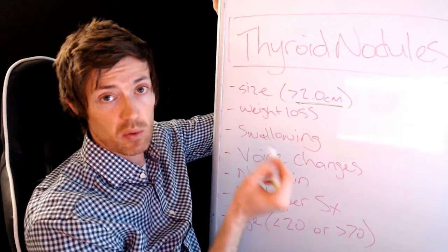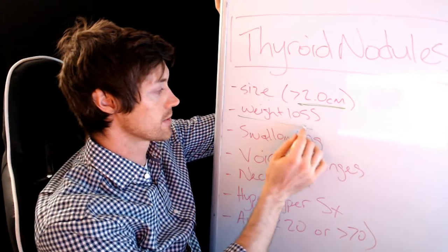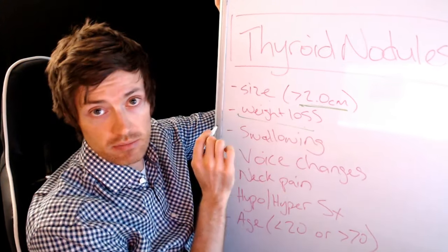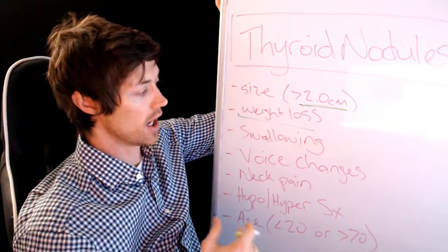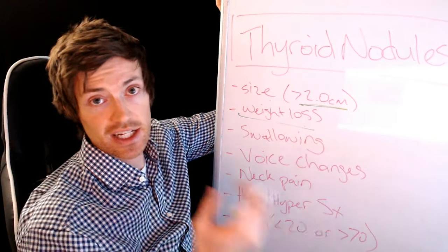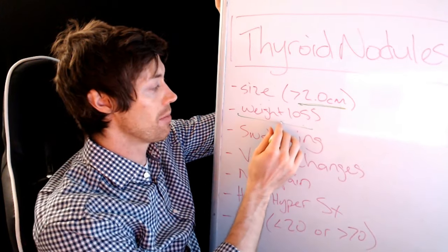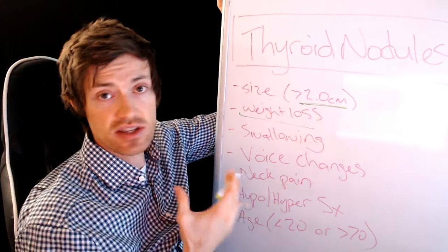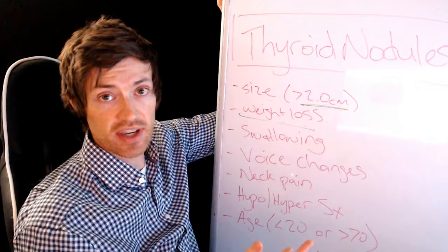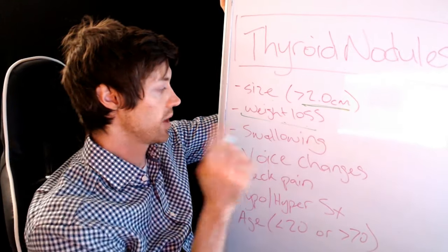Now the second symptom that would be worrisome would be unexpected weight loss. So the key here is unexpected. If you're trying to lose weight and you're dieting and you're exercising and you're losing weight, not really a problem. We're talking here about unexpected weight loss. And that's a symptom that occurs in lots of cases of cancer. That's why we're interested in this. So unexpected weight loss is another problem.